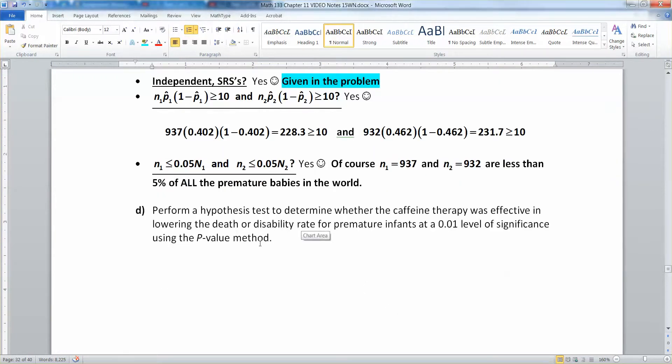We're going to perform that test with a p-value method using a 0.01 level of significance. We're trying to determine whether the caffeine therapy was effective in lowering the death or disability rate. We want to lower the death and disability rate, and we have a 0.01 level of significance.